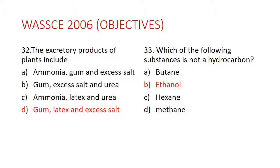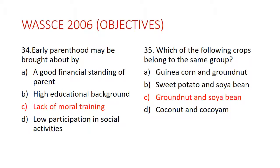Question 33: Which of the following substances is not a hydrocarbon? The answer is B — ethanol. A hydrocarbon is a substance which contains only carbon and hydrogen. Ethanol is made up of carbon, hydrogen, and oxygen, so that makes ethanol not a hydrocarbon. That is why the answer is B.